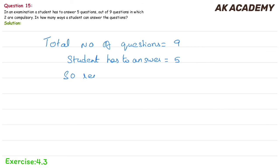So, remaining questions? I will tell you that 2 compulsory are already taken. So, 9 minus 2 which is equal to 7. Now the student has to answer from 7 questions.